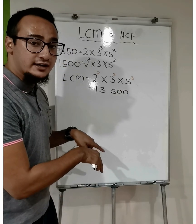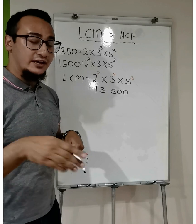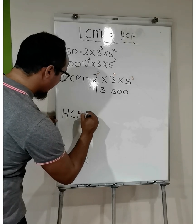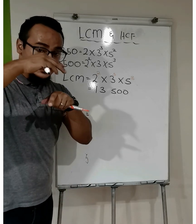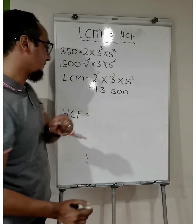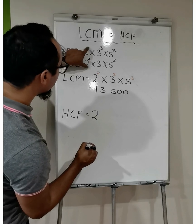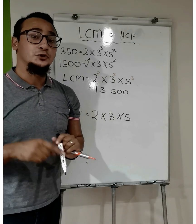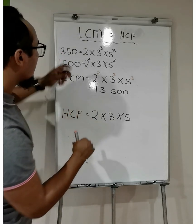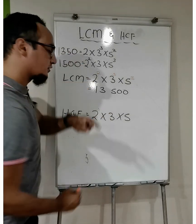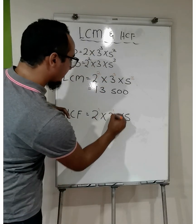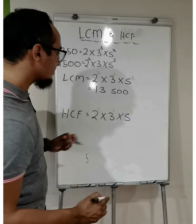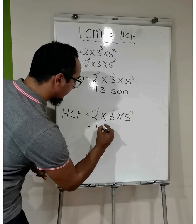On to highest common factor — pause this video, see if you can do it by yourself, and we'll double-check afterwards. For the highest common factor, I look for a repeated number but take the one with the lowest exponent. 2 repeats itself, 3 repeats itself, and 5 repeats itself. Of the 2s, the lowest exponent is to the power of 1. Of the 3s, the lowest exponent is to the power of 1. Of the 5s, it's to the power of 2. Calculating gives an answer of 150.